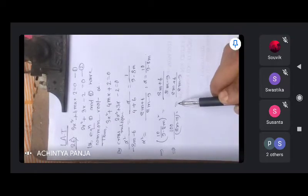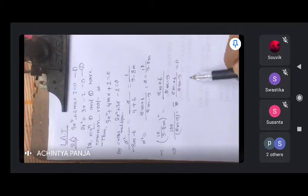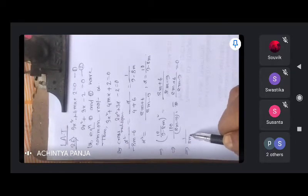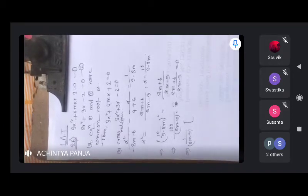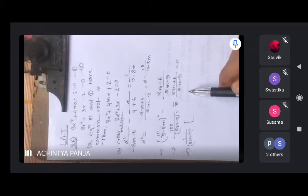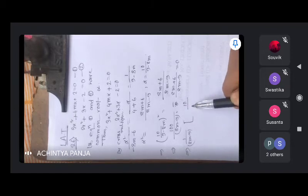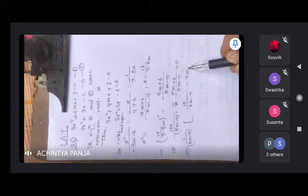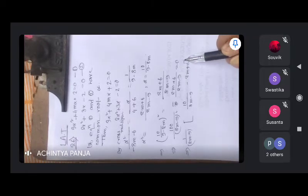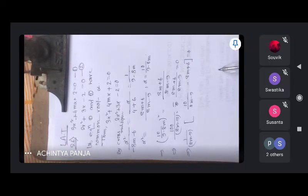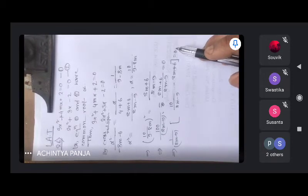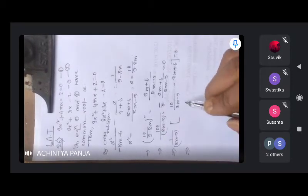So 1 by 8m minus 9 common, 4 plus 8m minus 9. 10, 8m minus 9, 8m, 9.